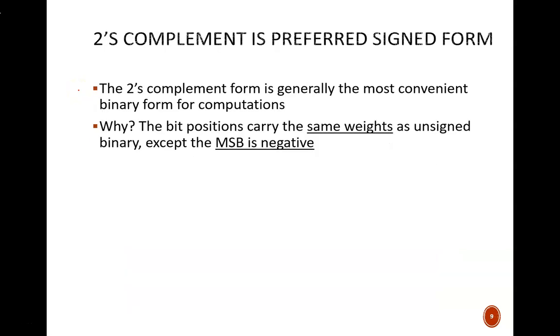Of those three common forms shown a couple slides back, twos complement form is the most widely used. It is convenient for a couple of big reasons. One is that subtractions can be done relatively easily in this form. We'll see that in a later video. And the root of this is that in twos complement form, the bit positions carry the same weights as unsigned binary, with one little exception. The leading bit is negative.